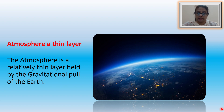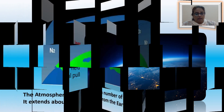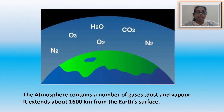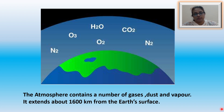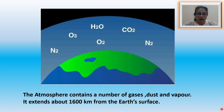The atmosphere contains a number of gases, dust and vapour. It extends for about 1600 km from the earth's surface. However, about 99% of the total mass of the atmosphere is found about 100 km from the surface.